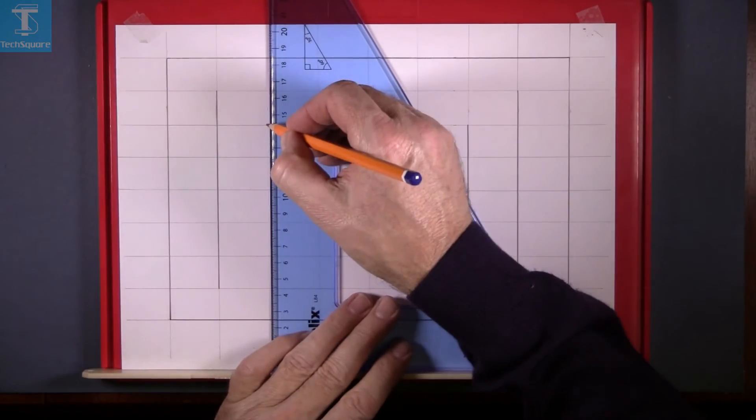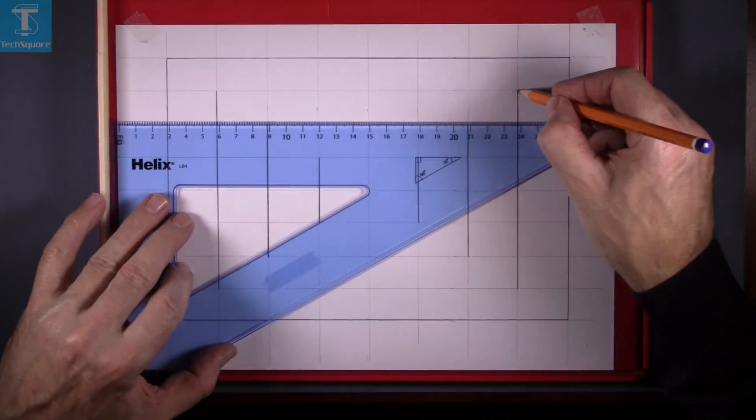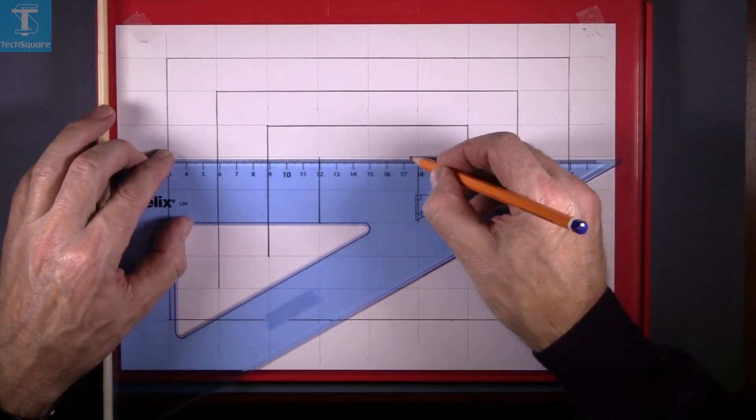Just keep the guide rule at the bottom and complete the vertical lines, and then change it over and complete the horizontal lines.